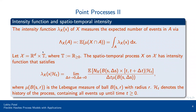Point processes are defined by their intensity functions — I'll call it lambda X for a general point process X. The intensity function is nice because its integral measures the expected number of events in a subset A of curly X. The example throughout this talk is when curly X is in R to the D cross T, so in space and time, where T is the non-negative real numbers. For a spatial-temporal point process, its intensity function satisfies a limit giving the infinitesimal rate of events expected at point S in space and time T. Generally, this expectation and intensity functions are conditional on the history of the process — all events that have occurred up until time T.